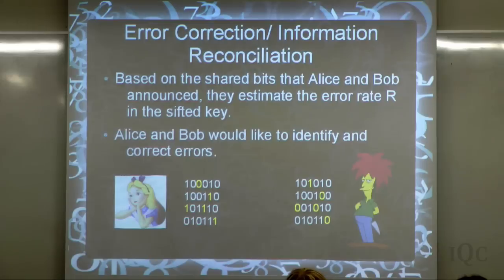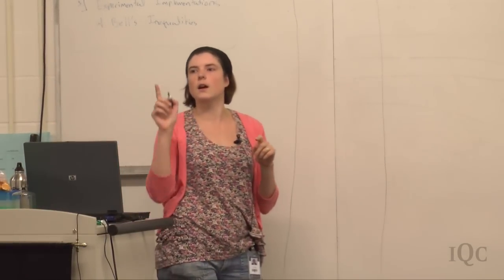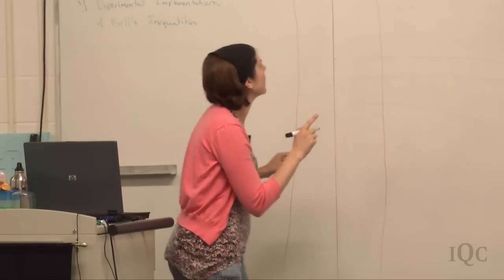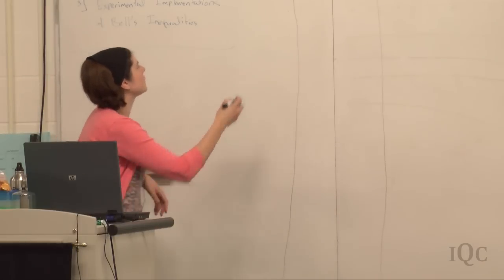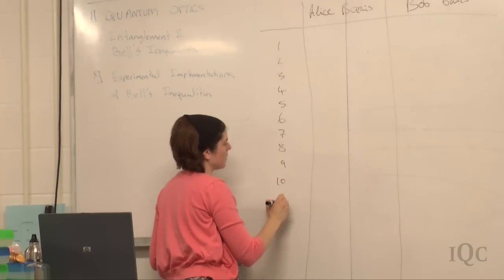Based on the shared bits that they announced, they can estimate the error rate in their specific key, and then Alice and Bob would like to identify incorrect errors. We're going to start by going through yesterday's data — Alice, Bob, and Eve. Before we can go on to error correction, we have to do the classical part: basis reconciliation. So let's have Alice and Bob call out their basis and we'll see whether they agree or not.